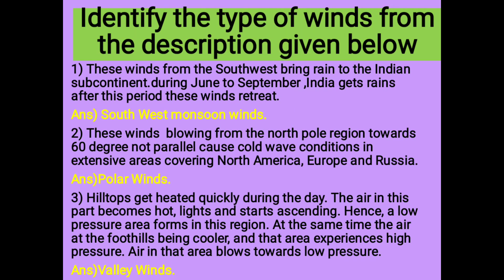6. Identify the types of winds from the description given below. 7. These winds from the southwest bring rain to the Indian subcontinent during June to September. India gets rains after this period and these winds retreat. Answer: Southwest monsoon winds.